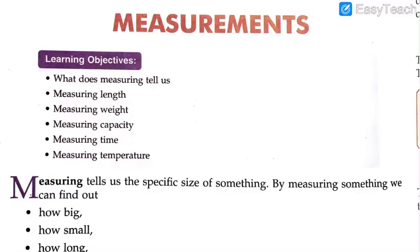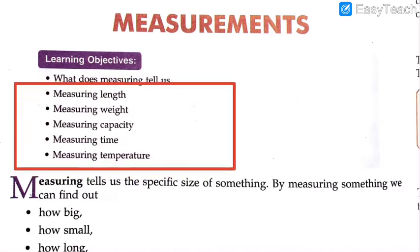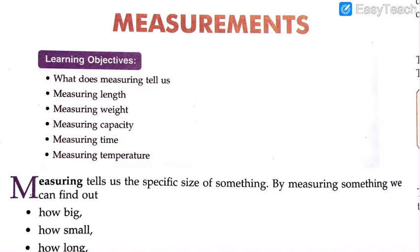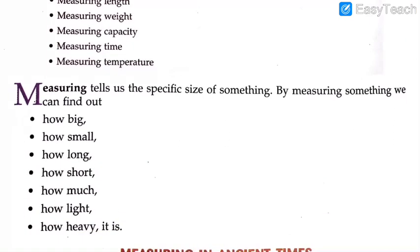Chapter number 10: Measurements. We have learned many things, starting with the meaning of measurement. You will learn what measuring tells us and what its use is — measuring of length, weight, capacity, time, and temperature. Every one of these things is measured in different ways with different instruments. Measuring tells us the specific size of something.